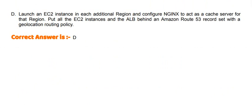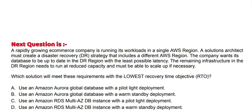The correct answer is Option B. Next question: A rapidly growing e-commerce company is running its workloads in a single AWS region. A solutions architect must create a disaster recovery strategy that includes a different AWS region. The company wants its database to be up to date in the DR region with the least possible latency. The remaining infrastructure in the DR region needs to run at reduced capacity and must be able to scale up if necessary. Which solution will meet these requirements with the lowest recovery time objective?